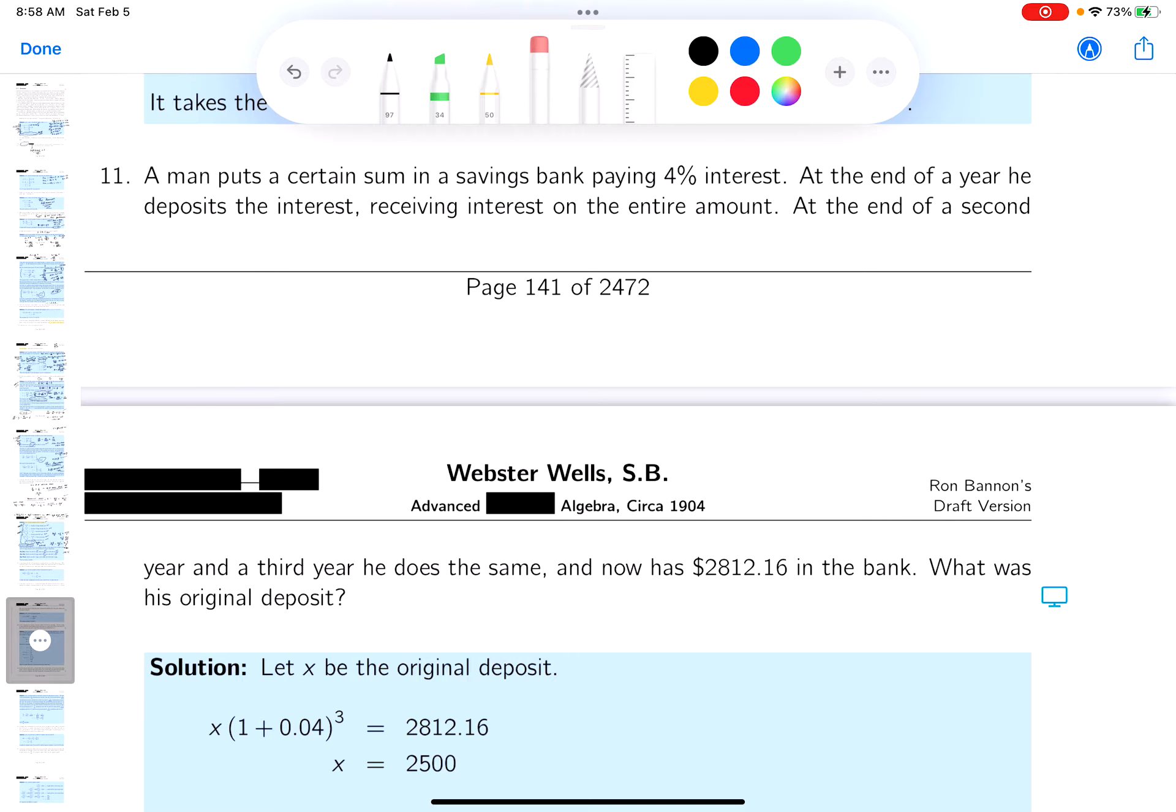Okay, we're on problem number 11. It says a man puts a certain sum of money in a savings bank, paying 4% interest at the end of the year.